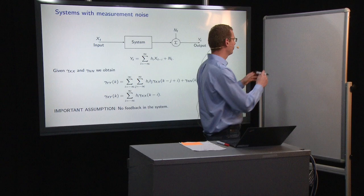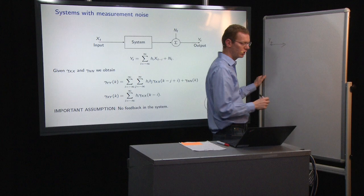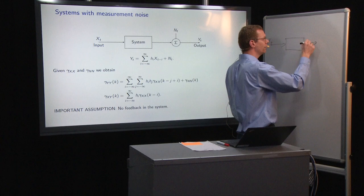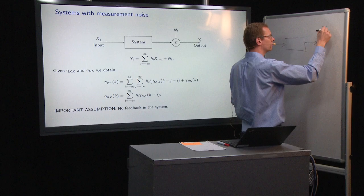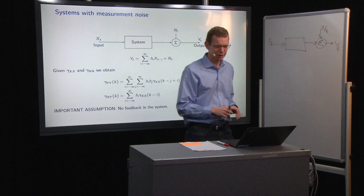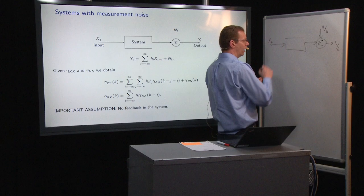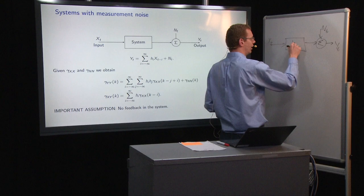So the systems that we are going to look at here are systems where we have an input x_t, then we have the system, and then what we do is that we add some noise here to get an observation y_t. So that's how we look at things.